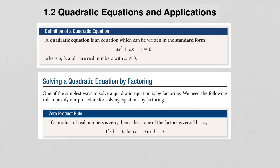The first way we learn how to solve quadratic equations is by factoring. This is by far the simplest way. To do this, we use the zero-product rule, which says that if the product of two numbers c and d is equal to 0, then either c has to be 0 or d has to be 0. This is something most of you have had experience with, so I'm going to treat this like a form of review.